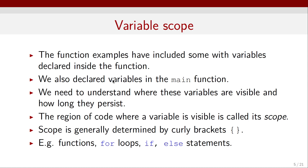Now let's talk about the scope of variables. The function examples we have seen so far include variables declared inside the function, and we also declare variables in the main function. We need to understand where these variables are visible and how long they persist. The region of code where a variable is visible is called the scope of the variable, and it is generally determined by curly brackets. When you use a function, a for loop, or if-else statements followed by curly brackets, you can define or limit the scope of a variable to be within those curly brackets.